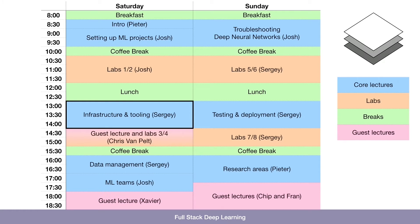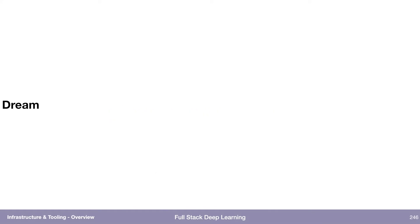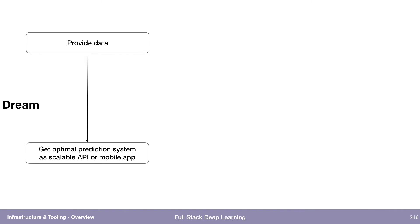The next module in this full-stack deep learning program is infrastructure and tooling. My motivation — my dream — is to basically provide some data to the machine learning project and then not have to do anything else and get an optimal prediction system, the best possible prediction system for that data. I want to deploy it on the web at massive scale or on a mobile app, whatever I actually want to do. But I don't want to write any code, debug models, or provision resources or buy GPUs. That's the dream.